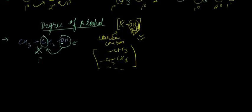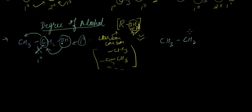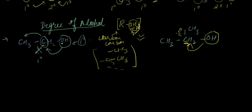For the compound CH2OH, the number of carbon atoms directly attached to this carbon is only one, so the degree of the alcohol is one — a first degree alcohol. Similarly, for the next example, the degree of the carbon atom attached to OH is two, so the degree of this alcohol is two — a second degree alcohol.